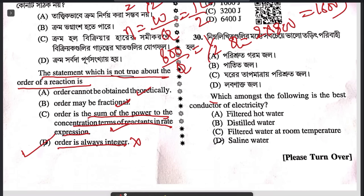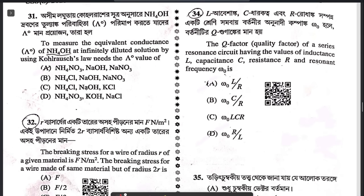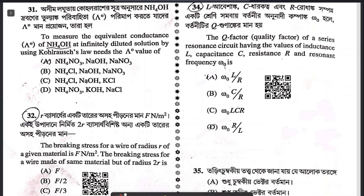Question 30: which among the following is the best conductor of electricity? The only possible answer is saline water. Question 31: to measure the equivalent conductance of ammonium hydroxide — a weak electrolyte — at infinite dilution, we use Kohlrausch's law. We need the lambda values of ammonium and OH⁻. The only possible answer follows from that.